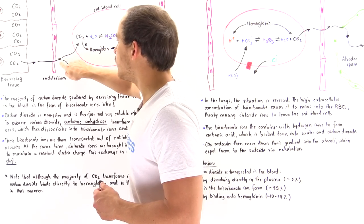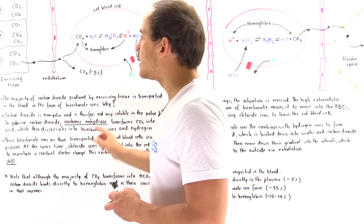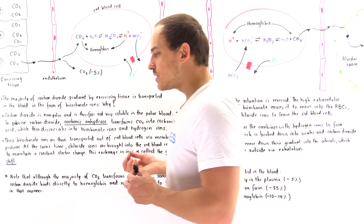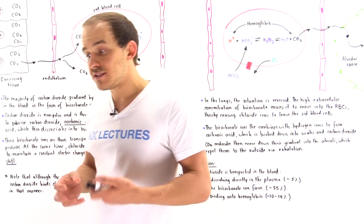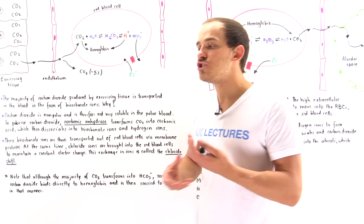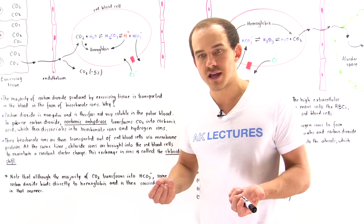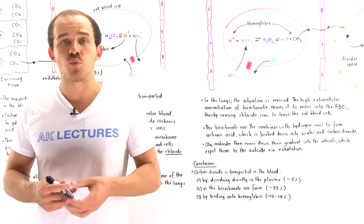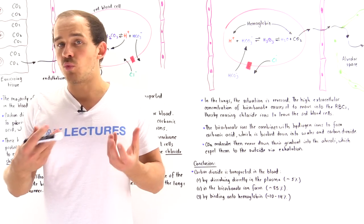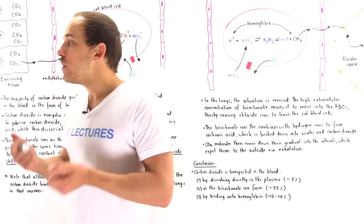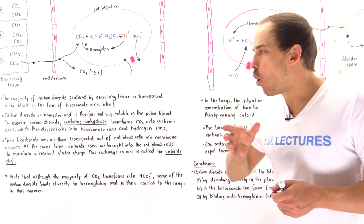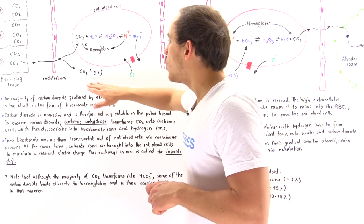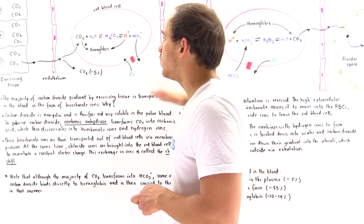Once inside the blood plasma, CO2 molecules are non-polar and will not generally dissolve in blood plasma. This is because blood plasma consists predominantly of polar water molecules, which do not mix well with non-polar CO2 molecules. As a result, only about 5% of the carbon dioxide — a very small portion — will remain dissolved in the blood plasma.